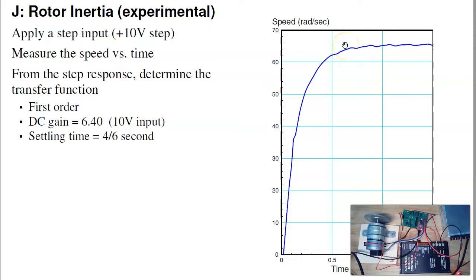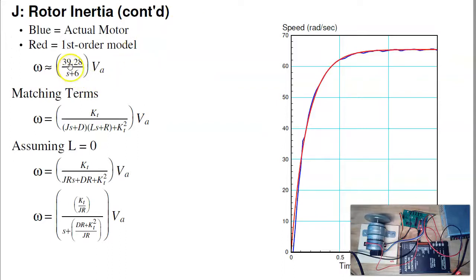From this, that really looks like a first order differential equation. That's the step response of a first order system. You know, no overshoot, a nice clean response. I can come up with a first order approximation for that. To do that, I would say the DC gain is roughly 6.4. This goes to 64 radians per second. I've got a 10 volt step input. So 64 over 10 is 6.4, your DC gain. The settling time is about 4/6 of a second. That tells me the dominant pole is right around minus six. So what I can do is take a first order approximation that has the same DC gain, same dominant pole. Plot the step response of that first order system, that's the red line, compared to the actual motor. And you see that the two are pretty darn close.